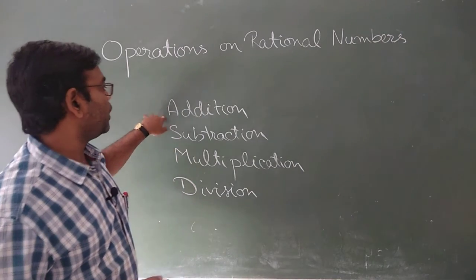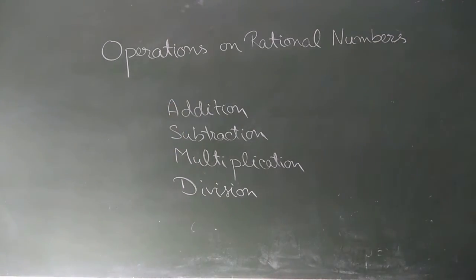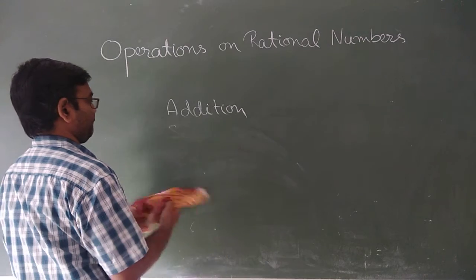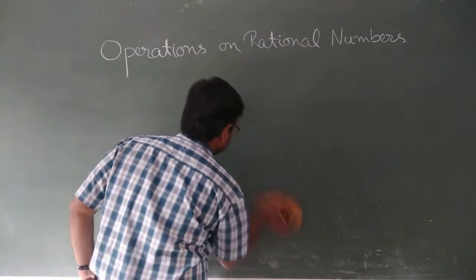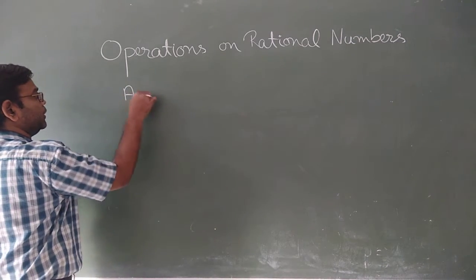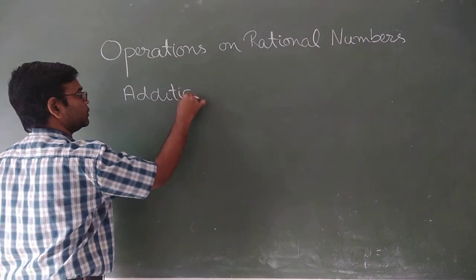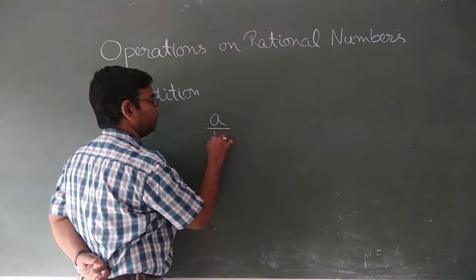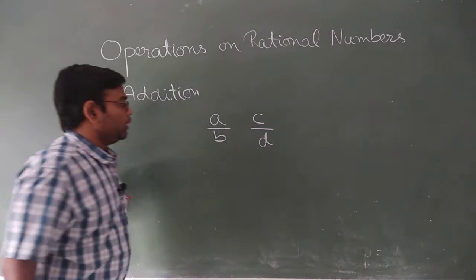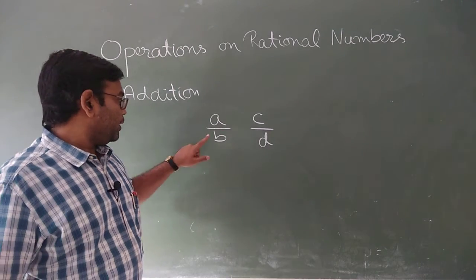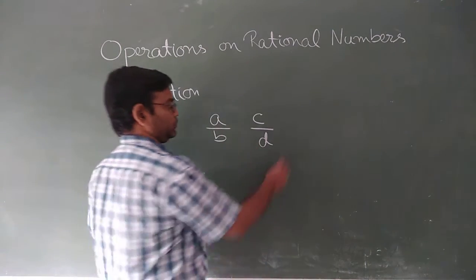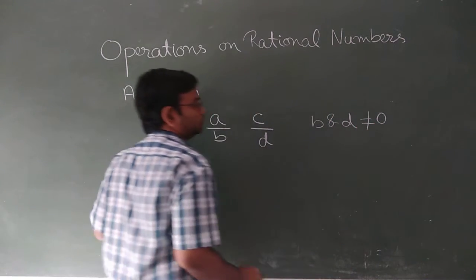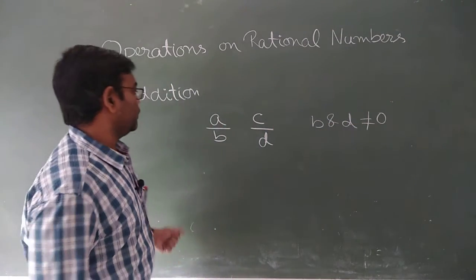So the first one is addition — how we add two rational numbers. Suppose there are two rational numbers: A upon B and C upon D. All four are different integers, and B and D are not equal to zero. Individually, B is not equal to zero and D is not equal to zero. So how do we add them?